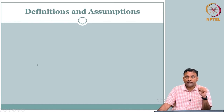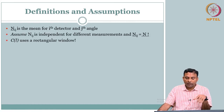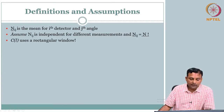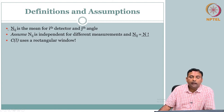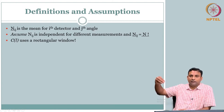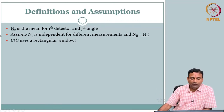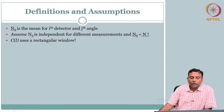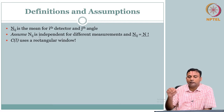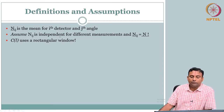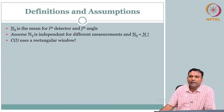Some more definitions and assumptions. n-bar is the mean of your i-th detector at j-th angle — this is the randomness. n is a random variable. For simplicity, we will assume that n_ij is independent: what is happening in one detector at one view need not affect the other one. We will take this independence assumption, which is not that bad.